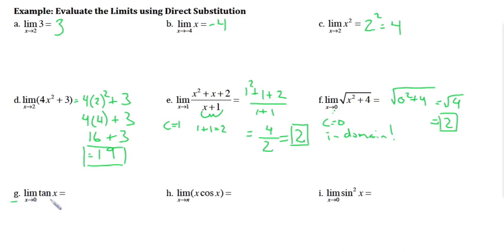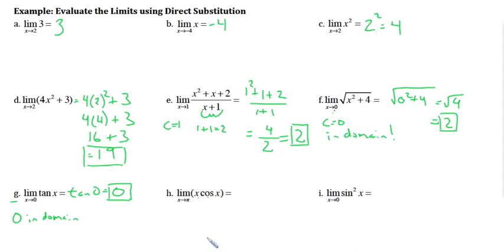Letter g is a trig function — if 0 is in the domain of tangent x we can use direct substitution. Zero is in the domain because tangent of 0 equals 0. So the limit of tan x as x goes to 0 is just 0. For the next one, x times cosine x — we find the limit of x as x goes to pi and the limit of cosine x as x goes to pi and multiply. Pi is in the domain of cosine, so direct substitution gives pi times cosine pi = pi times negative 1 = negative pi.